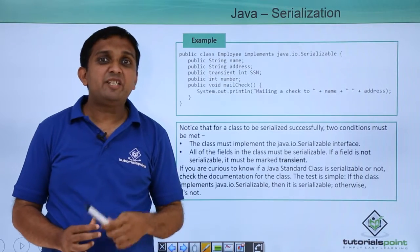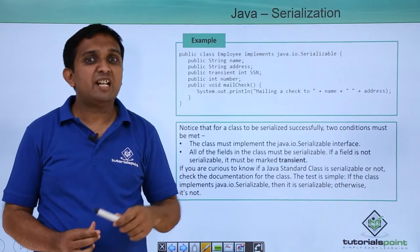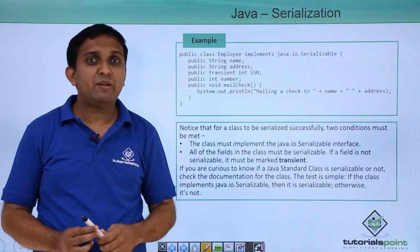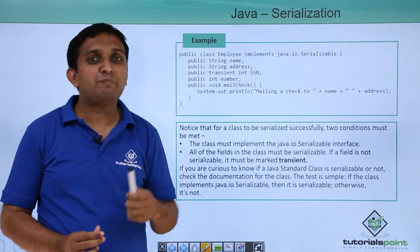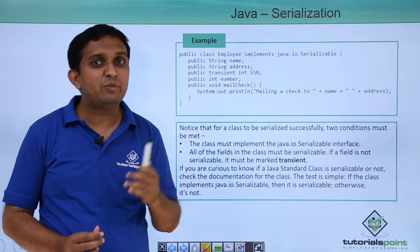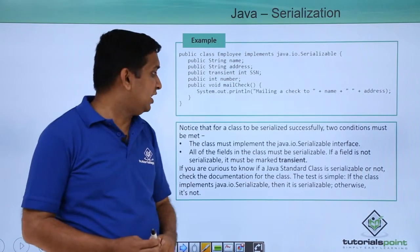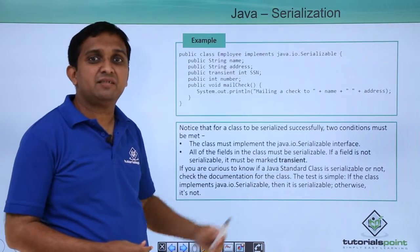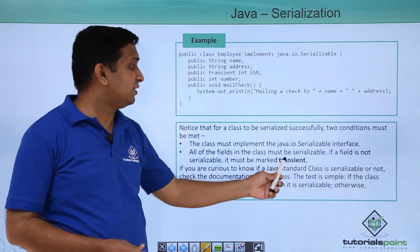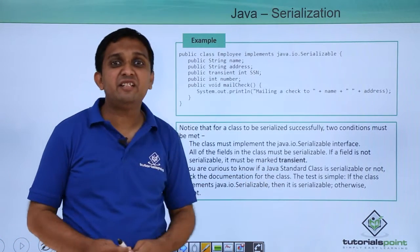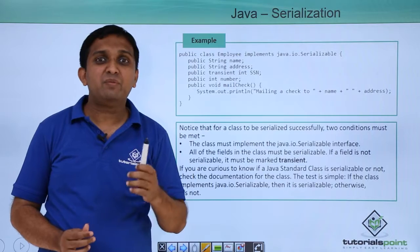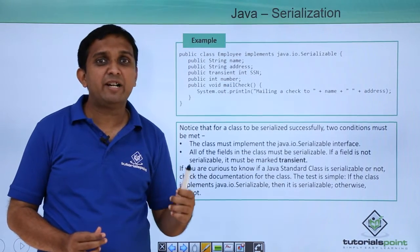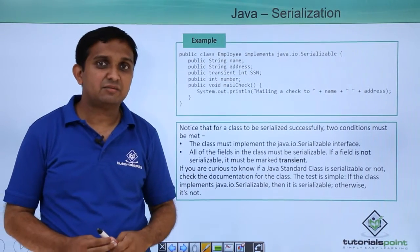It is possible that you don't want to serialize all the attributes of Employee. If you want to exclude a particular attribute from serialization, the keyword used is transient. You write the transient keyword before the attribute so that it can be excluded from the serialization.